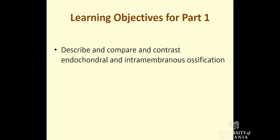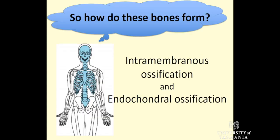What do those terms actually mean? Bones form through two processes: intramembranous and endochondral ossification. Breaking down those words — intra means within, membranous refers to a membrane, so it's within-a-membrane bone formation. Endochondral means endo means within, chondral refers to cartilage, so it's within-cartilage bone formation. These are the two different types of ossification that take place to form our skeletons.